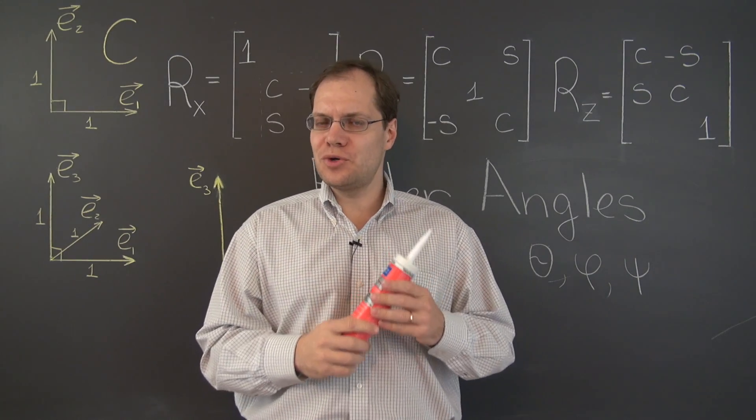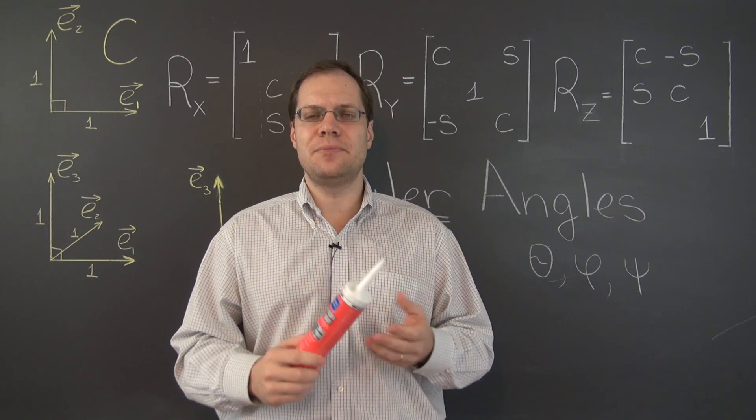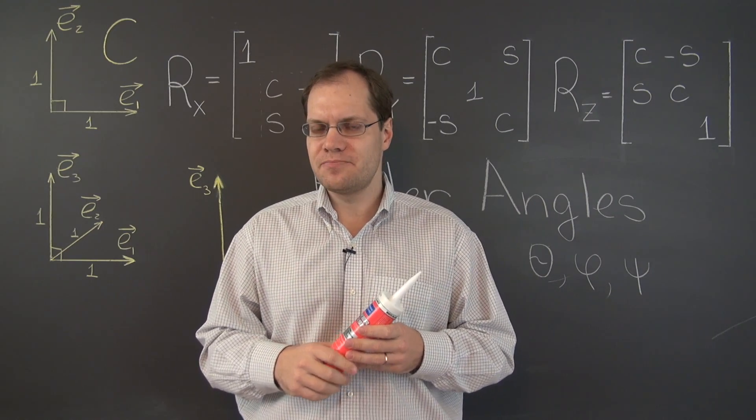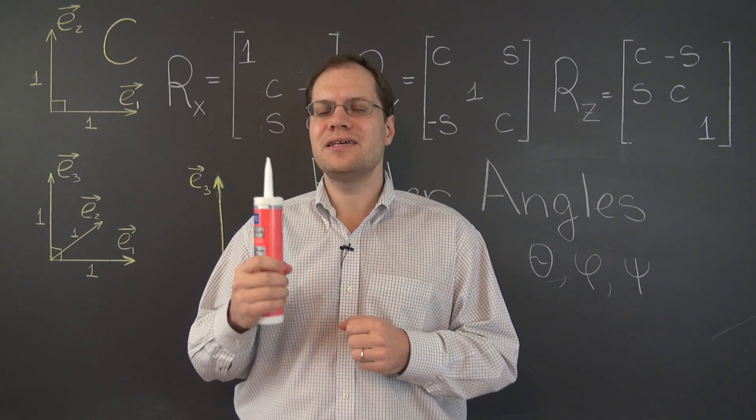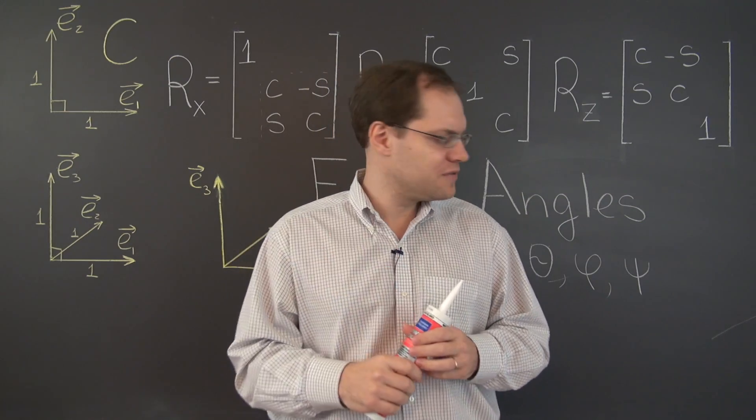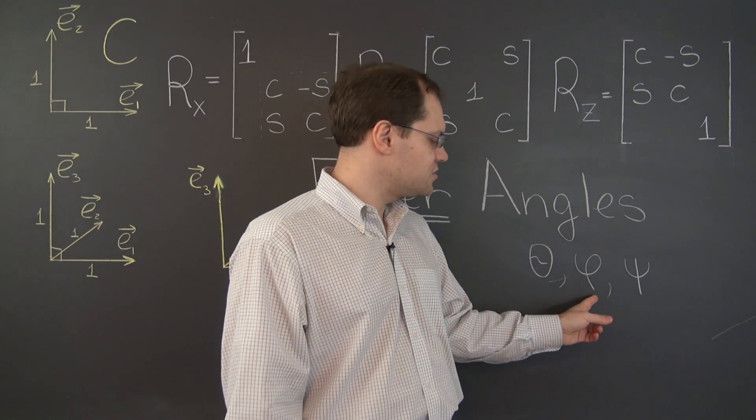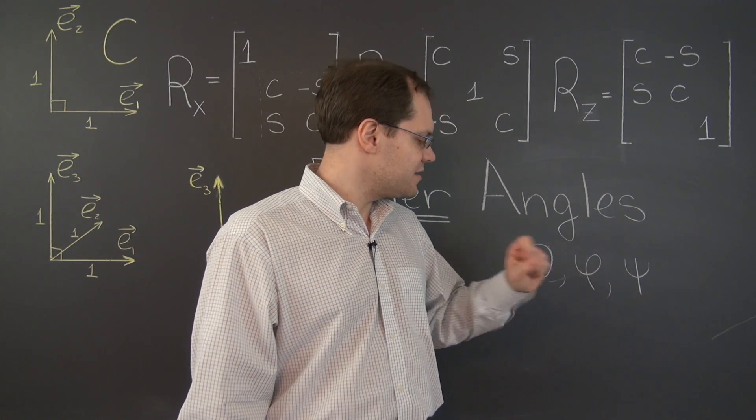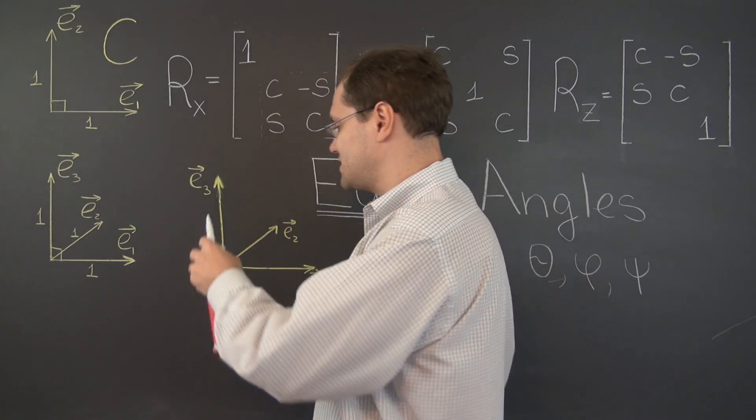So at first, I will show you a convention that's quite intuitive. But it's actually not what's typically used with Euler angles. And then we'll talk about why a different, slightly less intuitive convention is actually better. So according to the first, more intuitive convention, you get the latitude right first, then you spin the body around to get the longitude right, and then you get the amount of twist right.